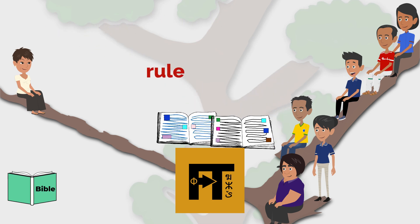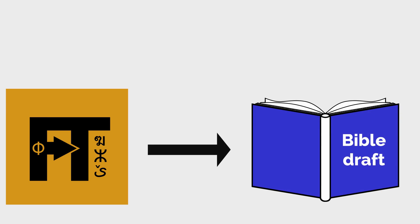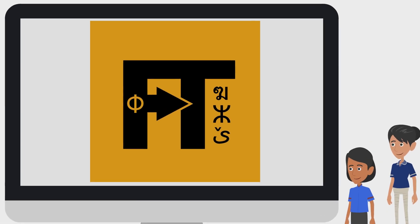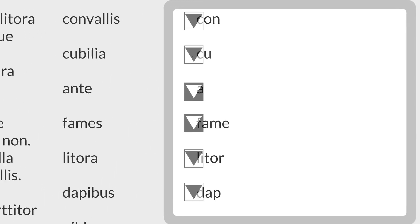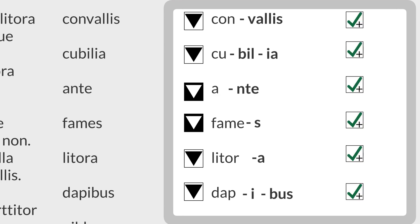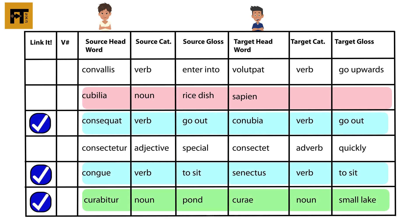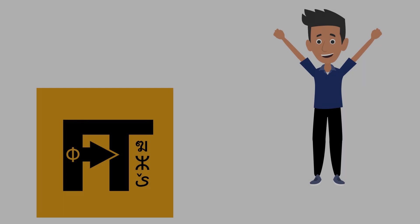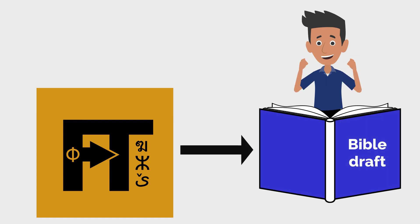Using both dictionaries and the linguistic rules they created, Lorenzo and the linguist run each book of Mayumi's Bible through the FlexTrans software to produce a draft in Lorenzo's language. They do this with the following steps. First, they have the computer analyze the Bible book to break each word down into its parts. Then, with the help of FlexTrans, they link all the vocabulary in the book from Mayumi's language to Lorenzo's. After this, they run FlexTrans to apply the linguistic rules and produce a draft of the book.